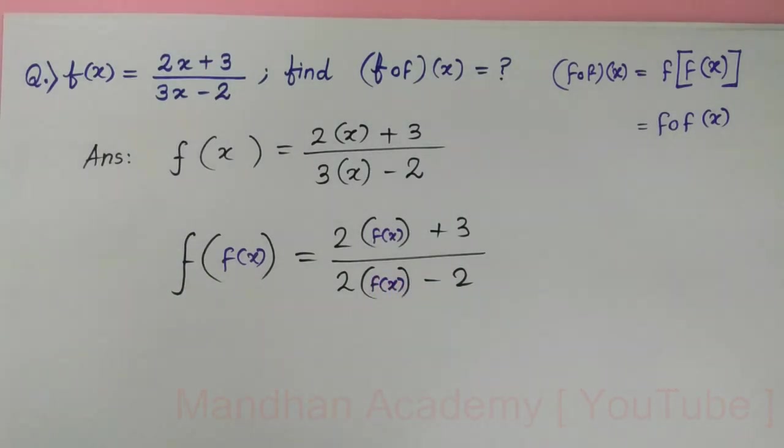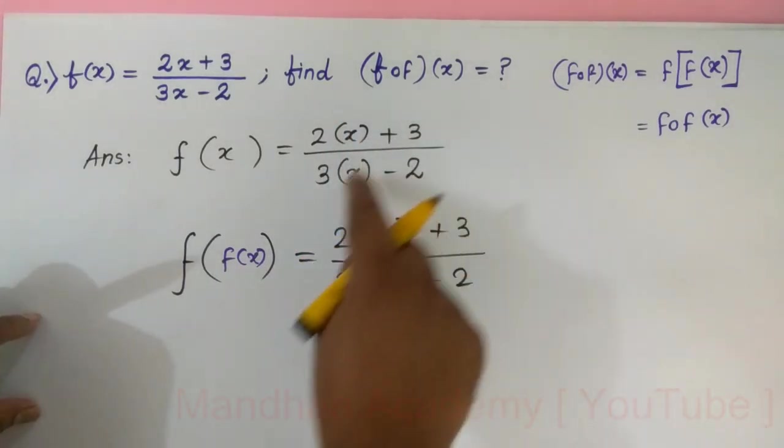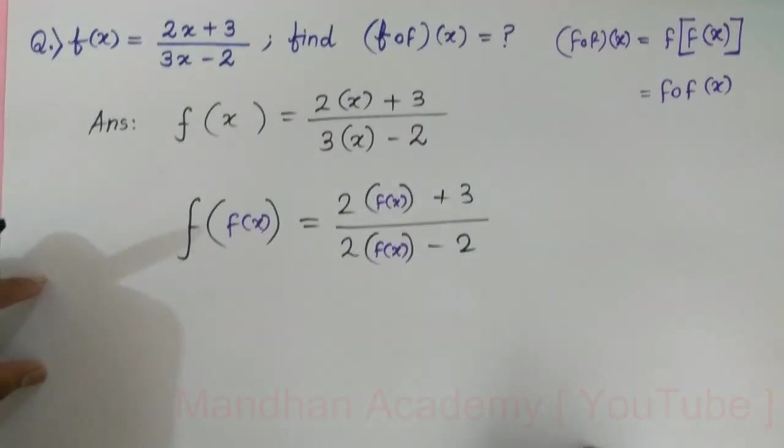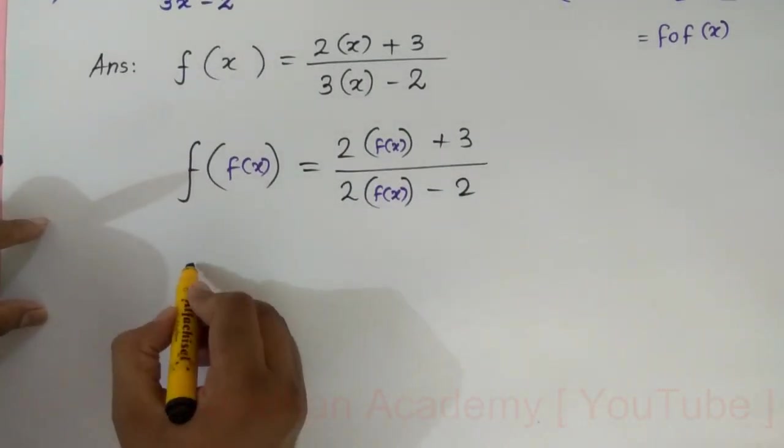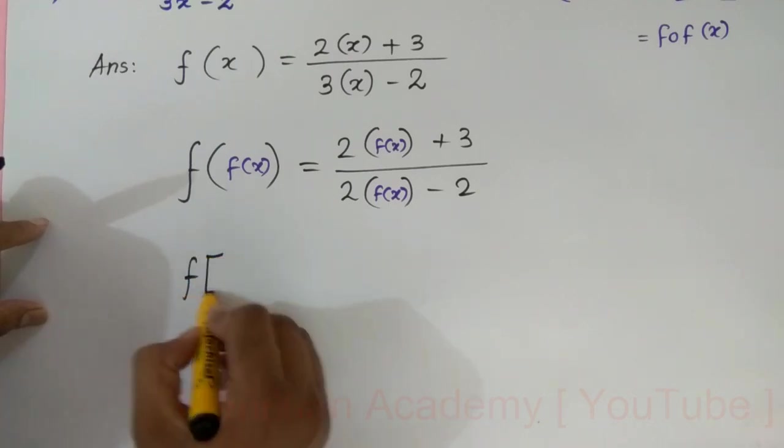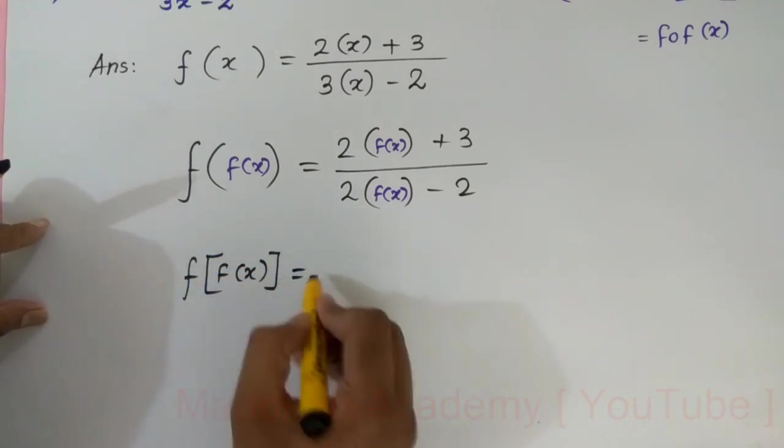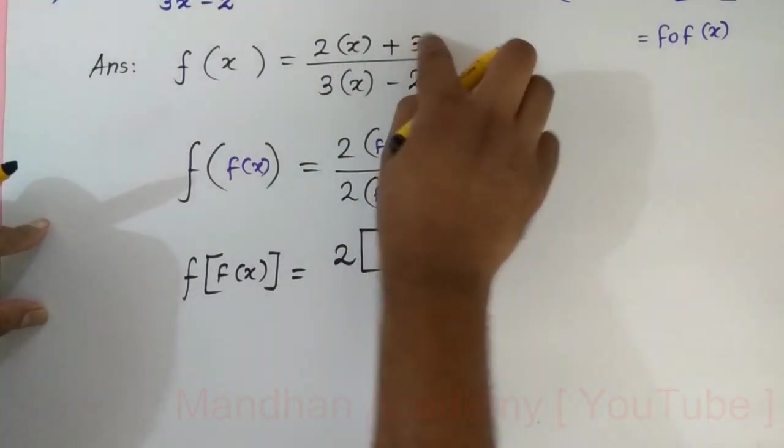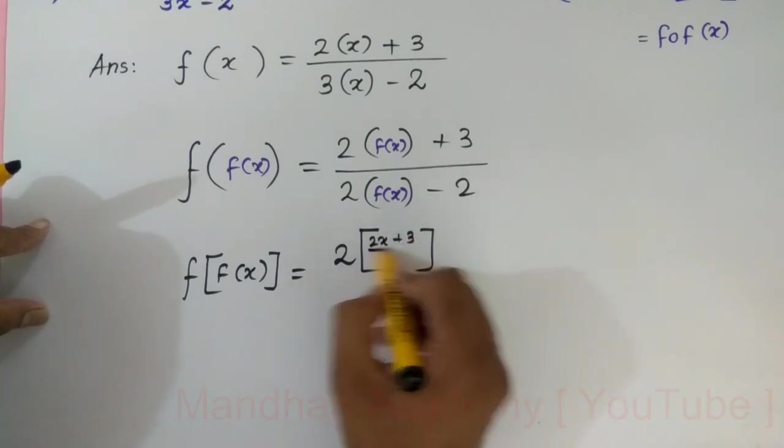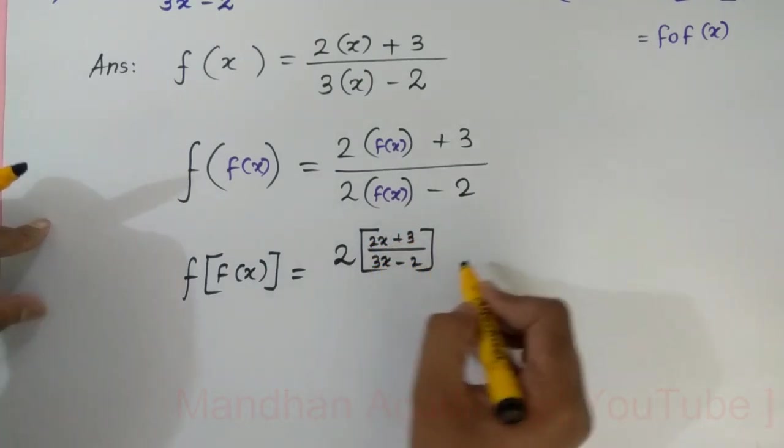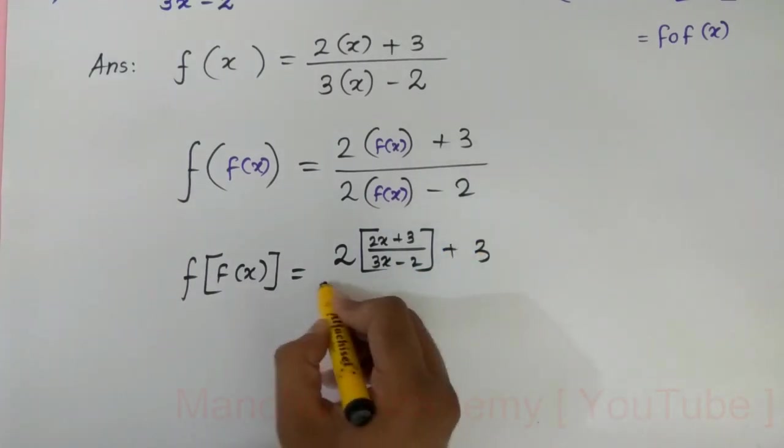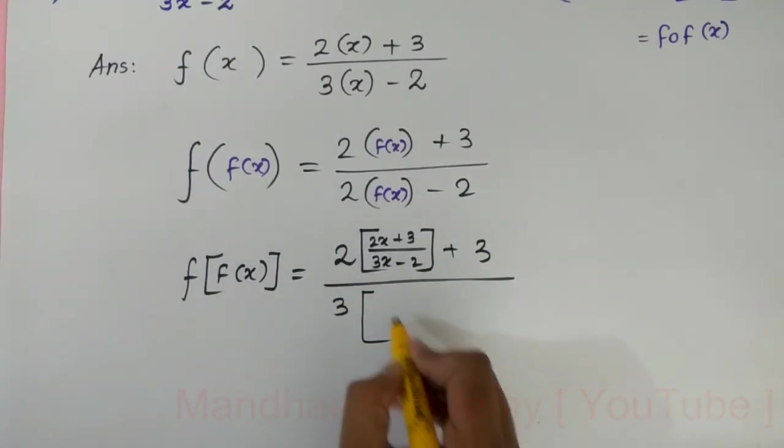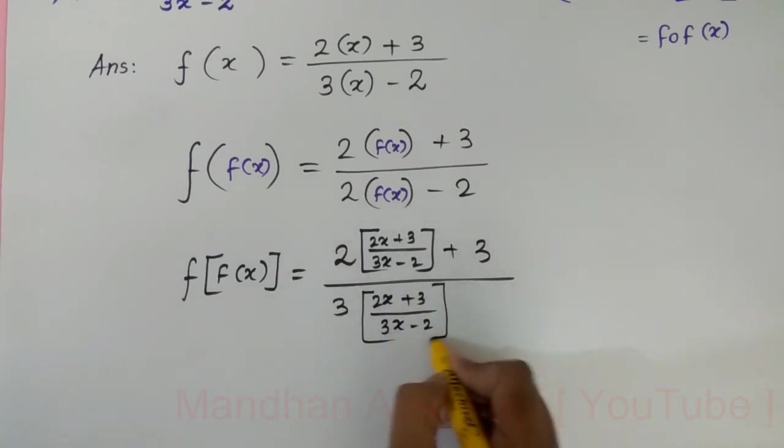Can you tell me what is f of x? The f of x is 2x plus 3 over 3x minus 2. Now f of f of x would become 2 times f of x, which is 2x plus 3 over 3x minus 2, plus 3 in the numerator, and in the denominator 3 times 2x plus 3 over 3x minus 2 minus 2.